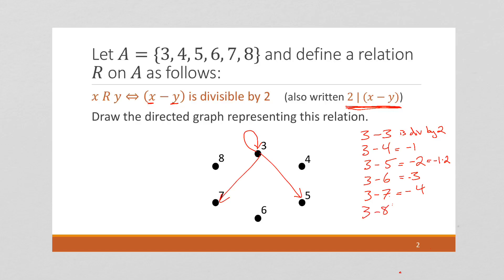And 3 minus 8 is negative 5, and that's not divisible by 2. So, the idea is you just want to go through this and figure out what elements are related to others. Now, I'm going to give you a minute. I'd like you to try to finish this graph and then continue. You can pause the video and then continue the video, and I'll go through it quickly.